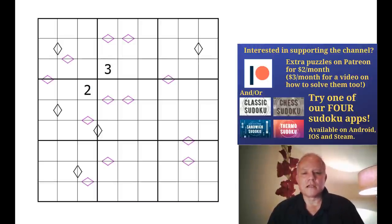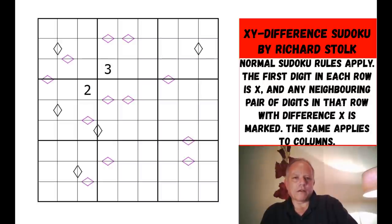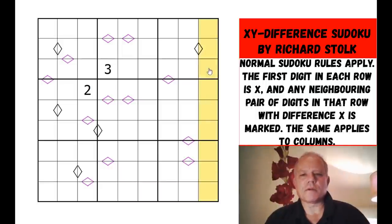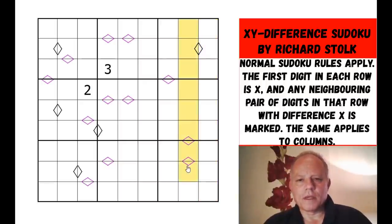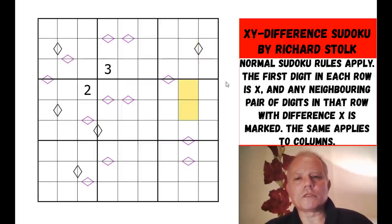We originally got sent a puzzle by Philip Bloom, who we've featured before on the channel. He'd created an idea called XY differences, where the rule set — as well as normal Sudoku rules — says that for every row and column, you look at the first number. If that number is the difference between any two neighboring cells in the row or column, then an inequality symbol is provided. That's the new rule set called XY differences.